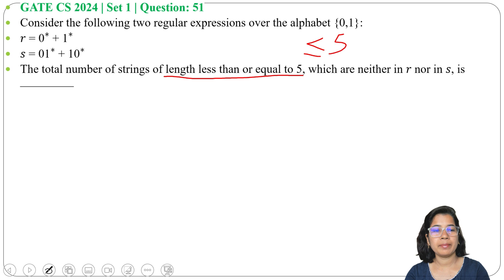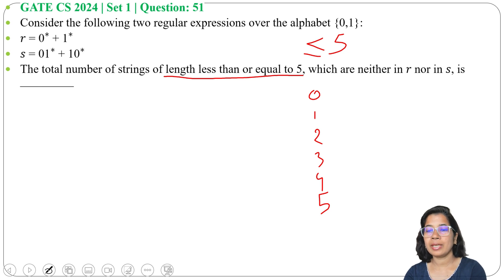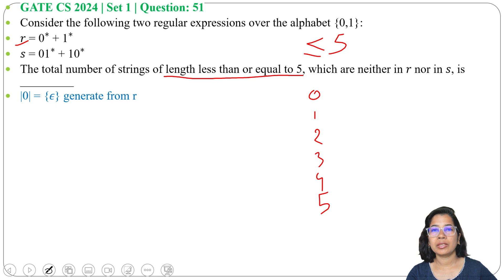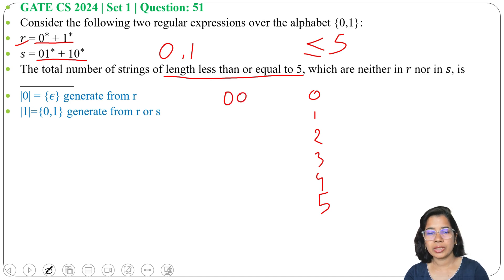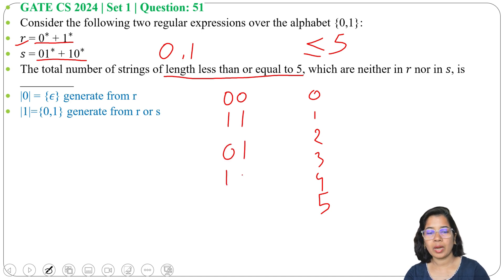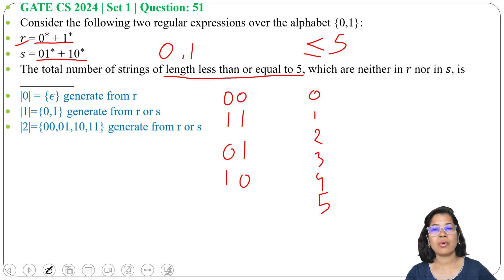Length less than or equal to 5 means lengths 0, 1, 2, 3, 4, and 5. Length 0 is just epsilon, and epsilon can be generated from R. Length 1 is single 0 and single 1, both can be generated from R or S. For length 2: 00 and 11 can be generated from R, and 01 and 10 can be generated from S. So all length-2 strings can be generated from R and S.